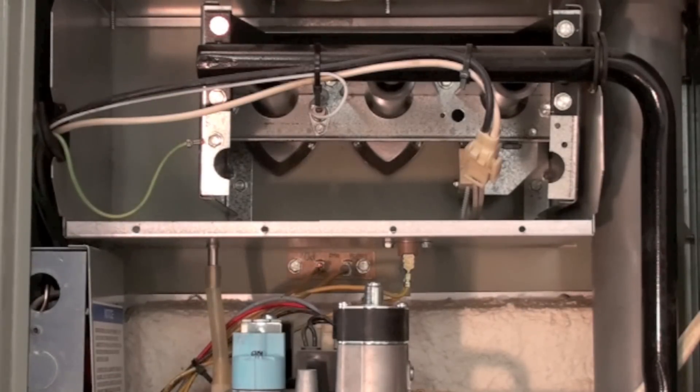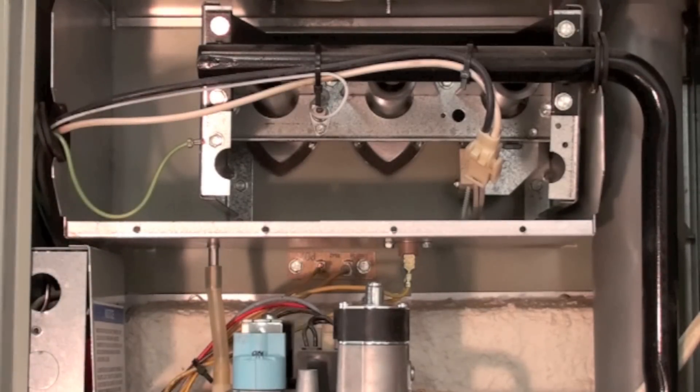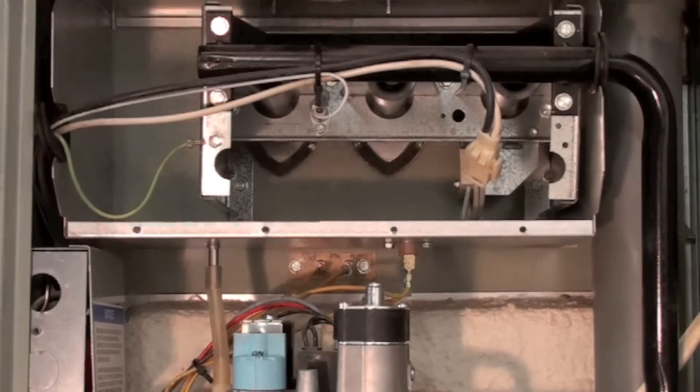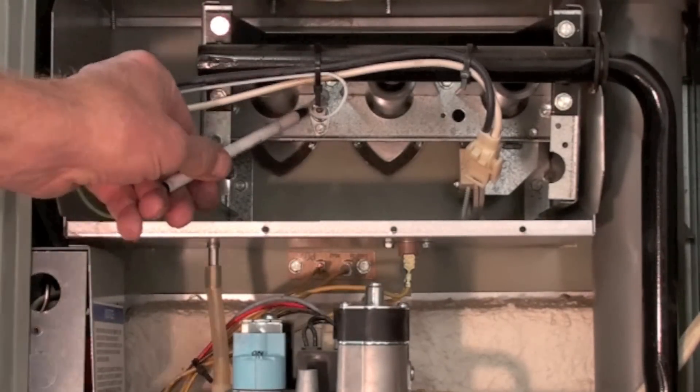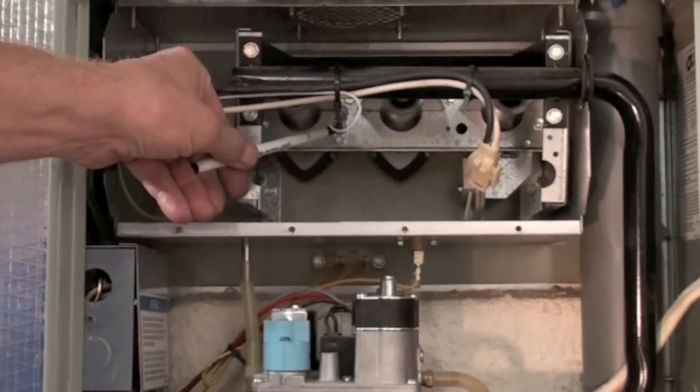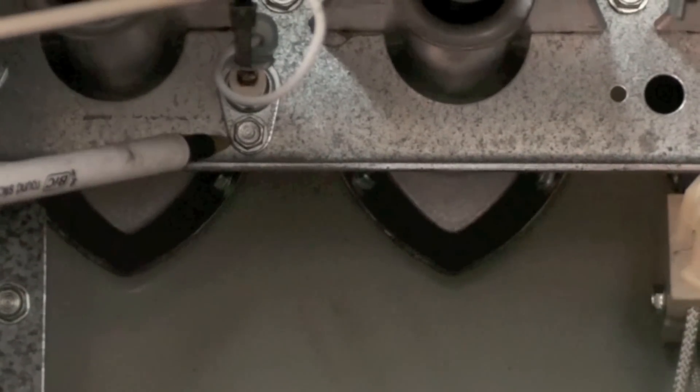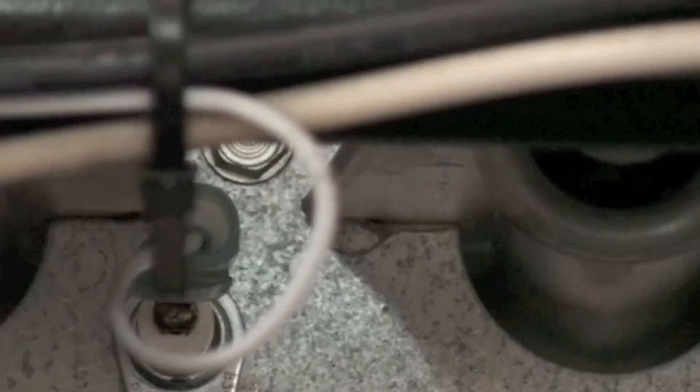That could be flame rod. Now the flame rod on this appliance here is actually right here. That's right past there. Take this screw off and it comes out. All it is is a stainless steel rod that sits in the flame.